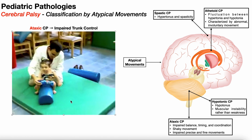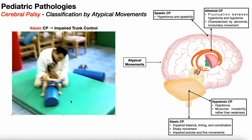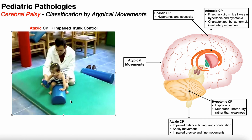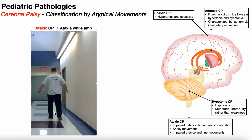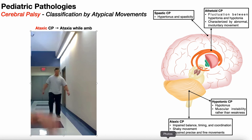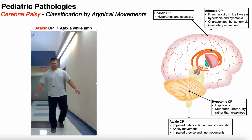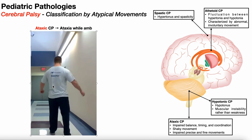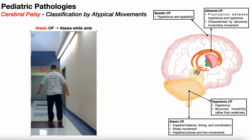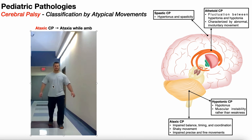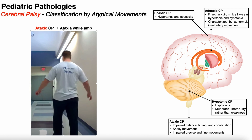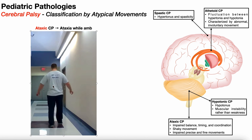With ataxic CP, the person can also have ataxia while walking — notice there's no spasticity or hypertonus, just a very shaky gait pattern due to cerebellar damage impairing balance, timing, and coordination. This person also lacks a reciprocal arm swing: normally as the right leg advances, the left arm should advance forward, and vice versa — this requires cerebellar coordination. The reciprocal arm swing is important in normal gait because it improves balance, so losing it further impairs balance in someone with an ataxic gait.